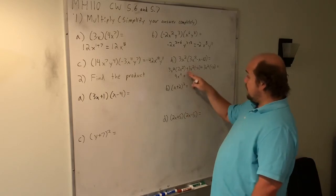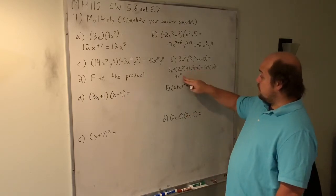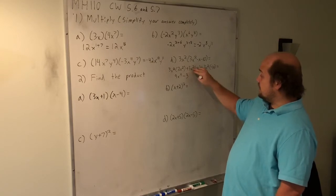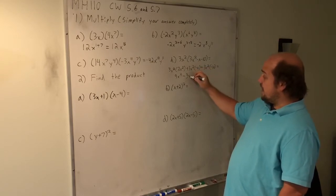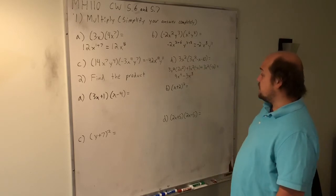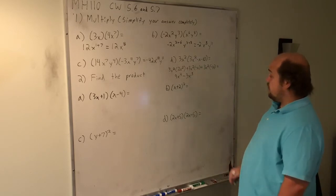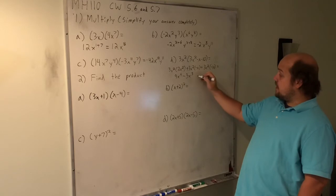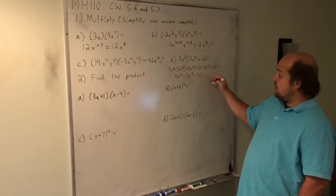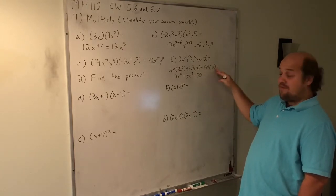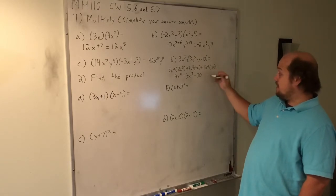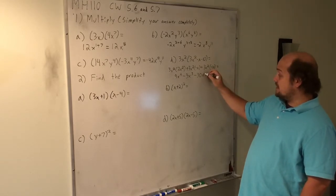My second multiplication: positive 3 times negative 1 gives me negative 3. x to the second power times x to the first power combined to give me x to the 2 plus 1, which is x to the third power. Finally, positive 3 times negative 10 gives me negative 30. I have x squared here, but I don't have any x to the 0 to combine it with. That's why it stays as x squared.